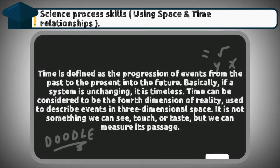defined as the progression of events from the past to the present into the future. Basically, if a system is unchanging, it is timeless. Time can be considered to be the fourth dimension of reality, used to describe events in